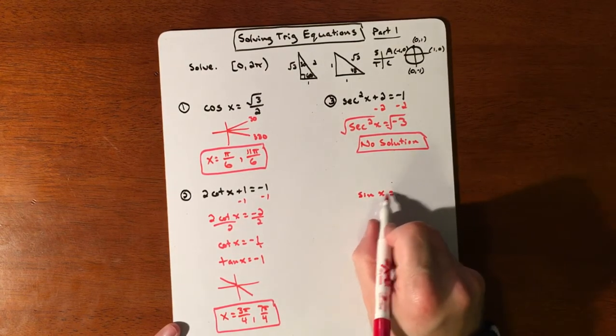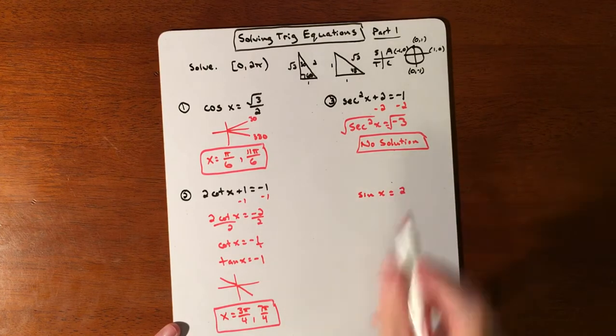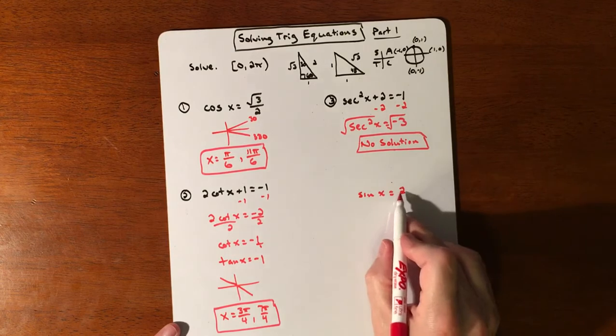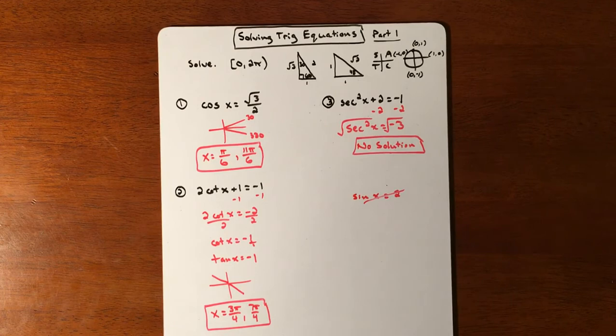Another situation is when you have sine of something. And remember that your output of this, no matter what your angle is, is going to range between negative 1 and positive 1. So if you're setting something outside that range, that's not going to create a solution either. So that's definitely a possibility of it coming up. We'll do part 2 of another 3, a little bit more challenging problems.